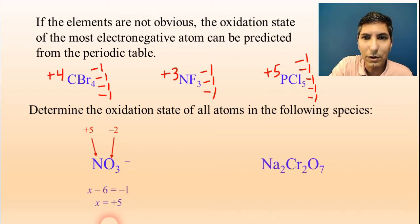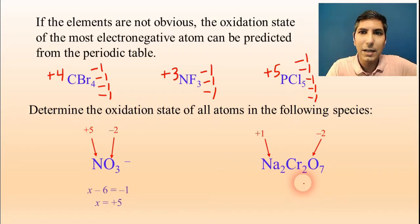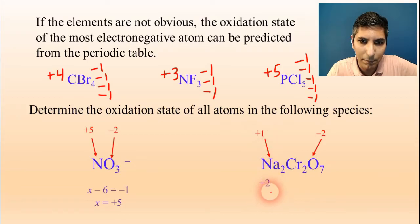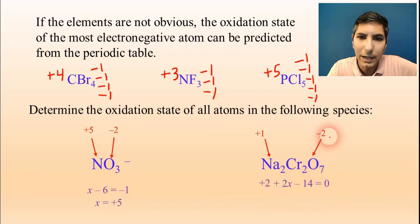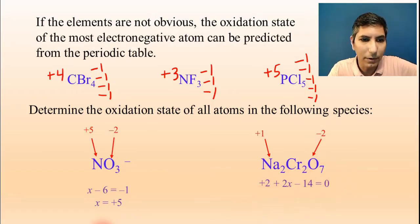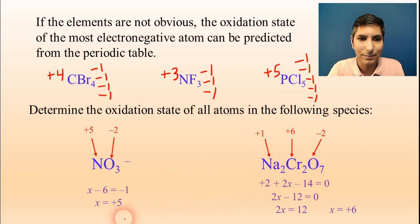For sodium dichromate, use what you know to solve for what you don't know. Sodium is positive one, and oxygen is negative two. Chromium is a transition metal — those can have all kinds of charges — so let's set up algebra. Two sodiums at plus one gives plus two; two chromiums are 2X; seven oxygens at negative two gives negative 14. Since this is a compound it adds up to zero: 2 + 2X − 14 = 0, simplifying to 2X − 12 = 0, so X = positive six. The oxidation state of chromium is positive six.